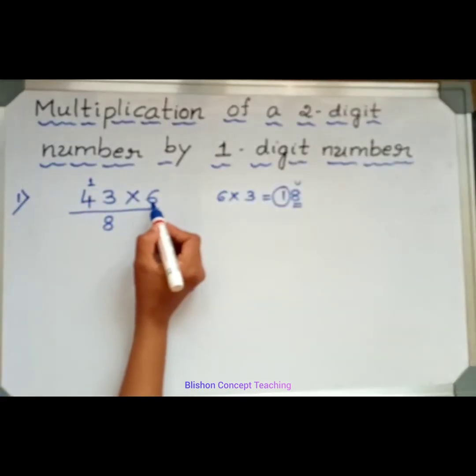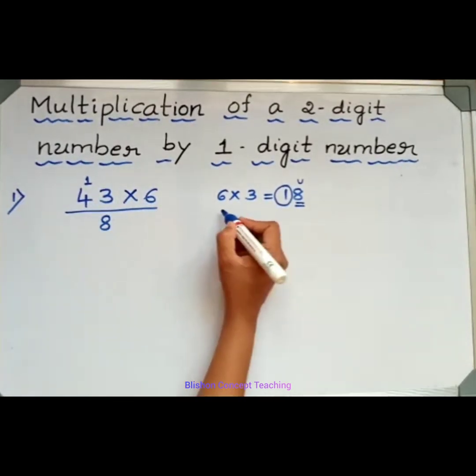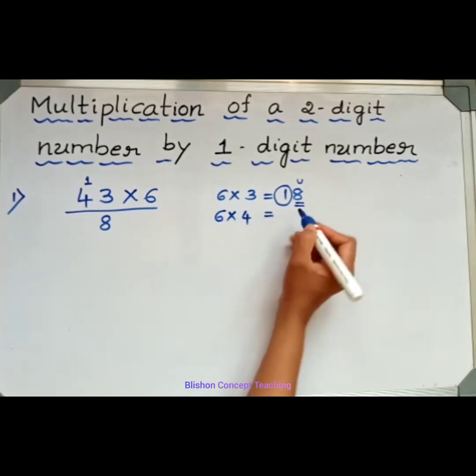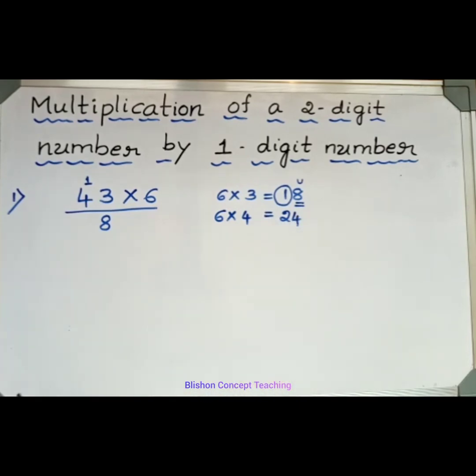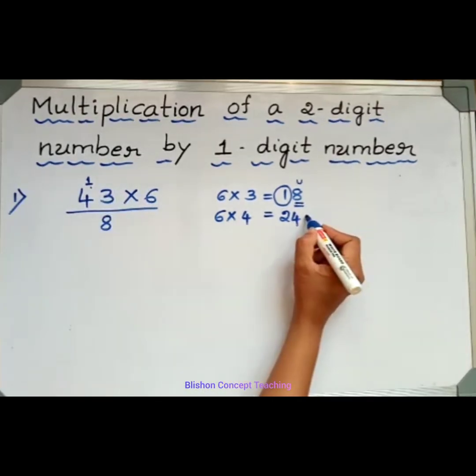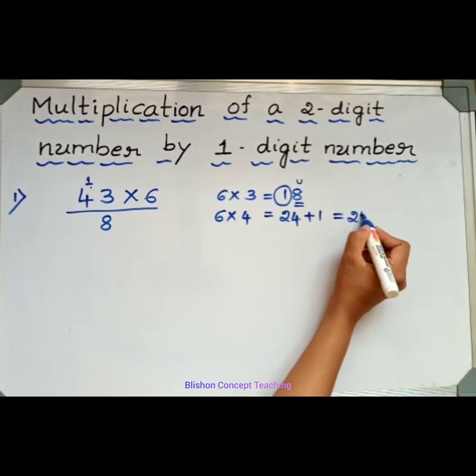Now, see here. Then 6 times 4, how much? 24. Then, for this 24, I will add this carryover. That is 24 plus 1. Is how much? 25.